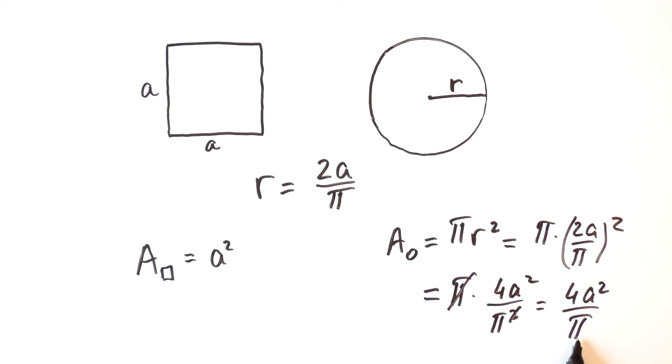And since pi is less than 4, then this is greater than a squared. So the area of the circle is greater than the area of the square.